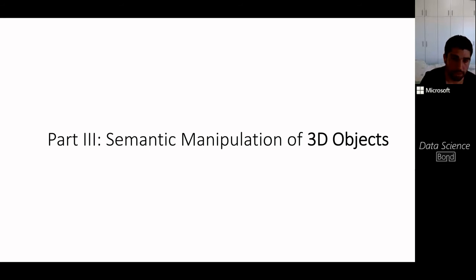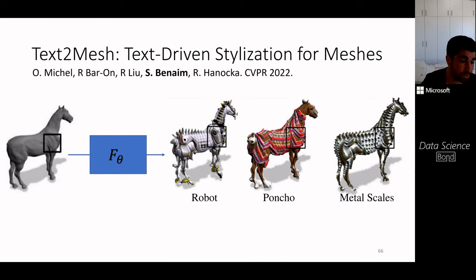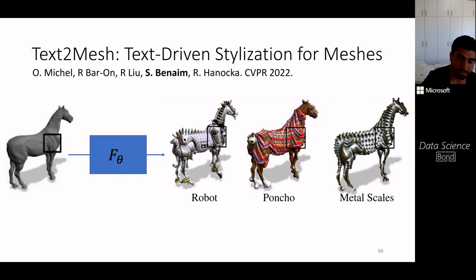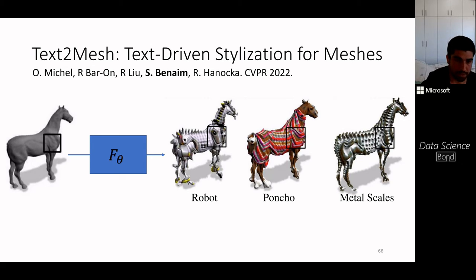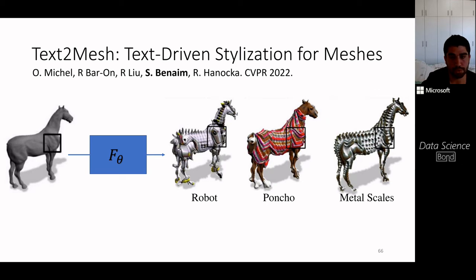This is a very recent work from CVPR called Text2Mesh — text-driven stylization for meshes. Two different aspects distinguish it from previous work: first, we manipulate a 3D object (like a horse) that can be viewed from multiple perspectives; second, the manipulation is driven by an intuitive text prompt. Anyone can give a text prompt and effectively be an artist by specifying 'I want this horse to look like a robot,' a poncho, and so on.